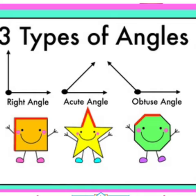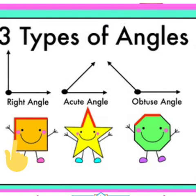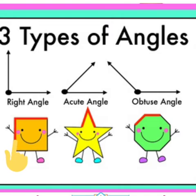Let me now explain three types of angles. The first one is right angle. Can you see that square? Just look at the corner — the corners are straight, the two lines. It is marked in red. So joh straight lines hai, exactly 90 degrees hota hai. So it is a right angle.